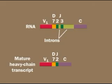The RNA is spliced, removing not only introns, but also any J segments between the first constant region segment and the J segment adjacent to the D segment.